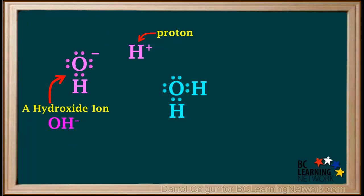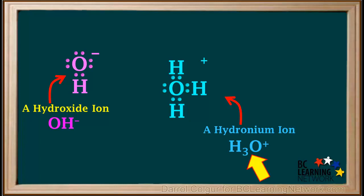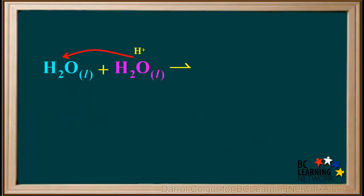The proton moves to a non-bonding electron pair on the other water molecule. We'll change its color to blue. The positive charge is now distributed over the whole ion, instead of just being on the H that it came with. This is now a hydronium ion, with the formula H3O+.